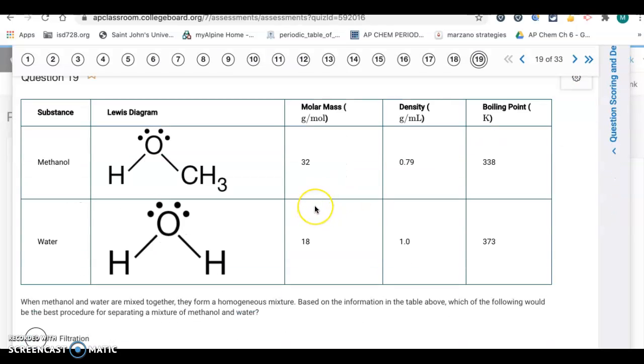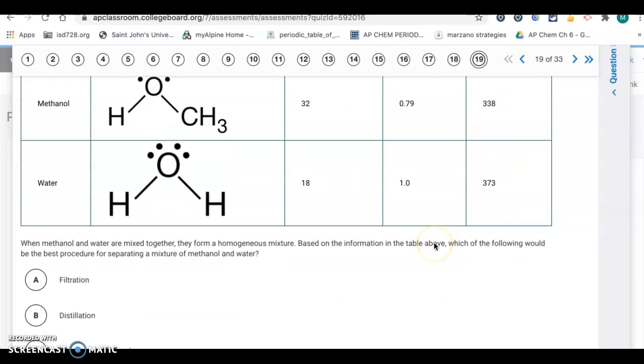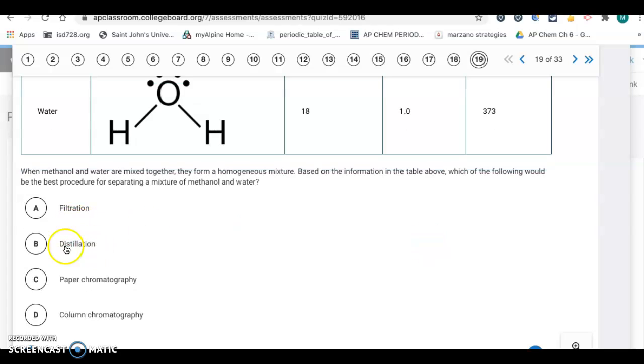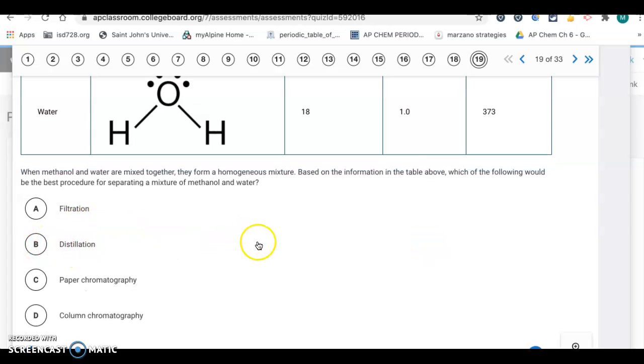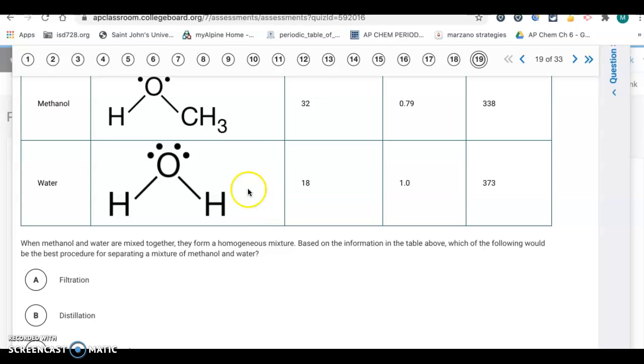Number 19. When methanol and water are mixed together, they form a homogeneous mixture. Which of the following would be the best procedure for separating a mixture of methanol and water? When you have a mixture of two different liquids with different boiling points, distillation is a good choice. Letter B, you would boil off the lower boiling point methanol and the water would stay behind. Distillation is what you'd want to use.